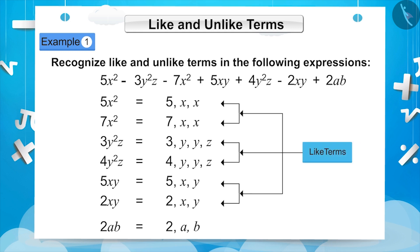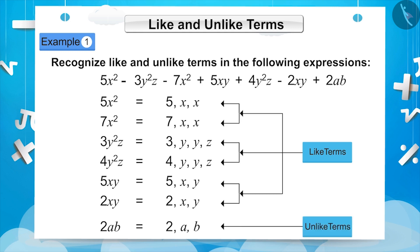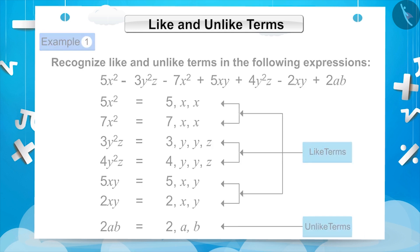Because they are all similar, 5x squared and 7x squared, 3y squared z and 4y squared z, and 5xy and 2xy are called like terms. The algebraic factors of 2ab are a and b. Since these factors are different from the others, these terms are called unlike terms.